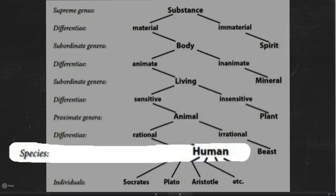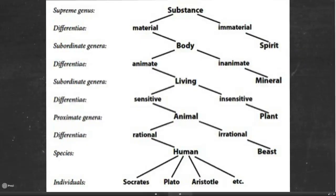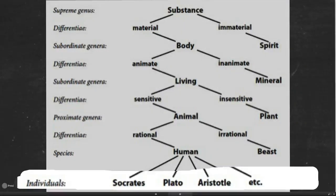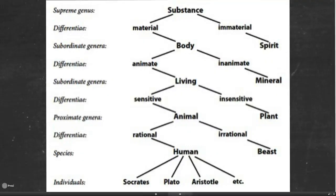Now, we've got two choices when asking what is a human being. The one is to give examples, to give instances like Plato, Aristotle, Socrates, Wayne, Hugo, etc.